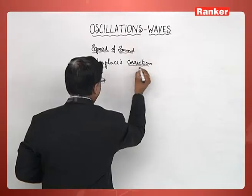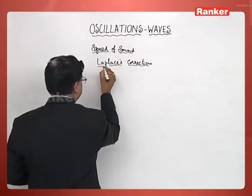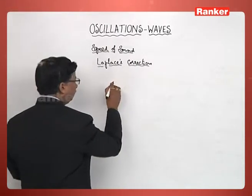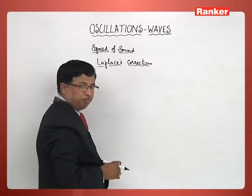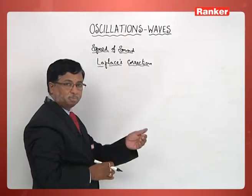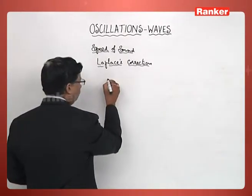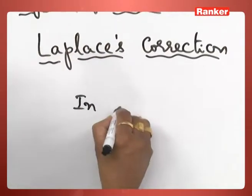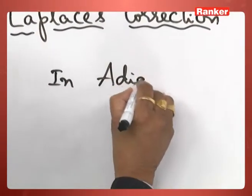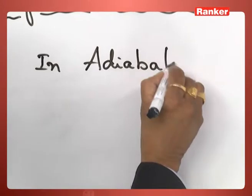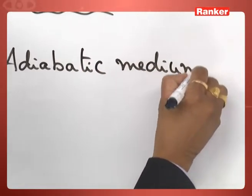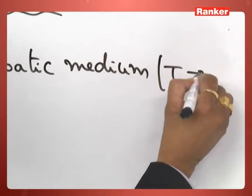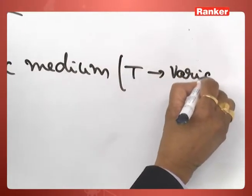What is the correction he has made? The concept is quite simple. He thought of the material medium not as an isothermal medium, but as an adiabatic medium. So in an adiabatic medium, we can understand straightaway that temperature is a variable.